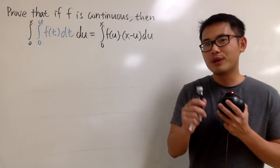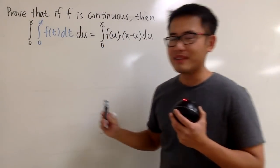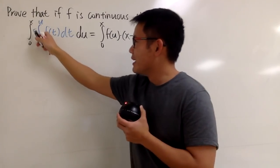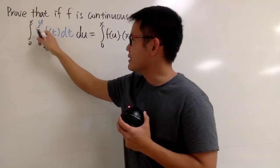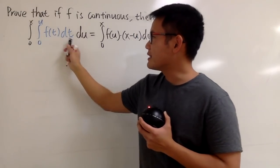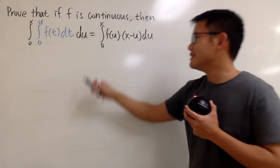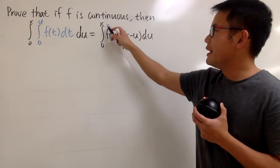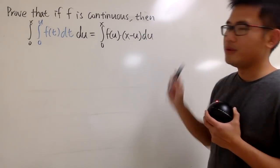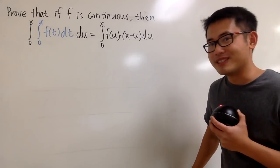Okay, let's do some proof of fun. Here we are going to prove that if f is a continuous function, then we have a double integral: the first integral from 0 to x, and then the second integral from 0 to u, and then inside we have f of t dt, and then du. We're going to show that it's equal to the integral from 0 to x of f of u times x minus u, du. Wow, we have a lot of integrals.